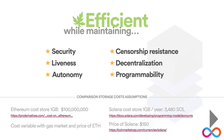One of the really amazing and important aspects of the Internet Computer is that it's amazingly efficient, but at the same time it maintains all of the key properties that we expect of blockchain — security, liveness, autonomy, censorship resistance, decentralization, and programmability.